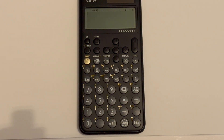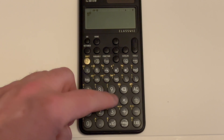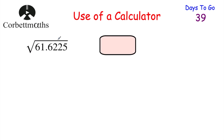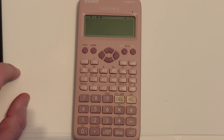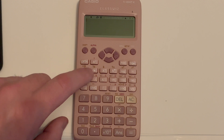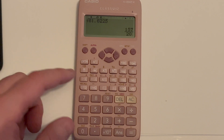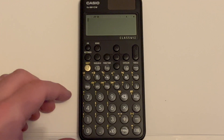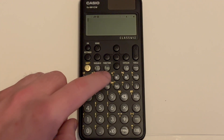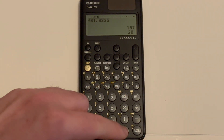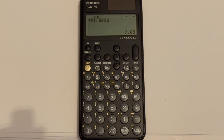On the other calculator, press 5, then the power button, then 6 and equals to get 15,625. Next, make sure you know where the square root button is. Work out the square root of 61.6225. Press the square root button, type in 61.6225, then press equals. You get 157 over 20 as a fraction, or 7.85 as a decimal. On the other calculator, press the square root button, type 61.6225, press equals, then format, down, decimal, and EXE to get 7.85.